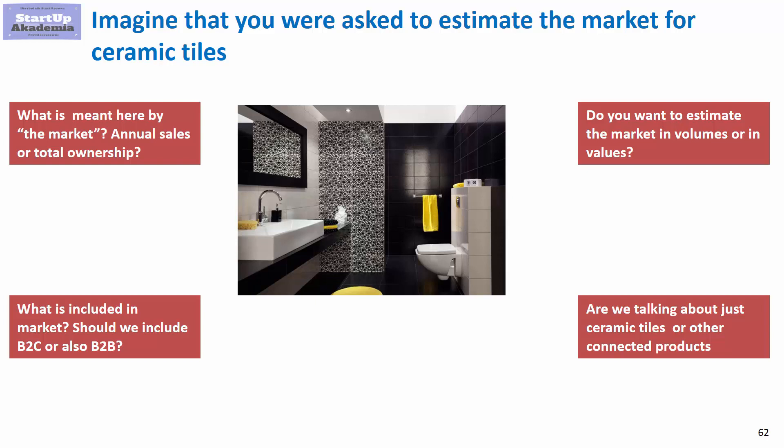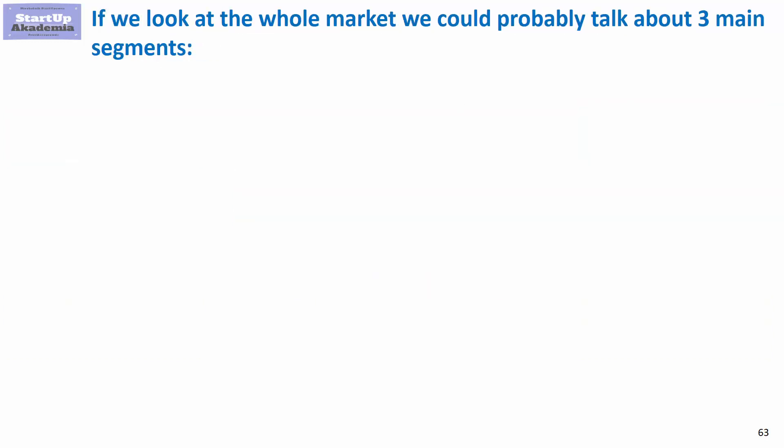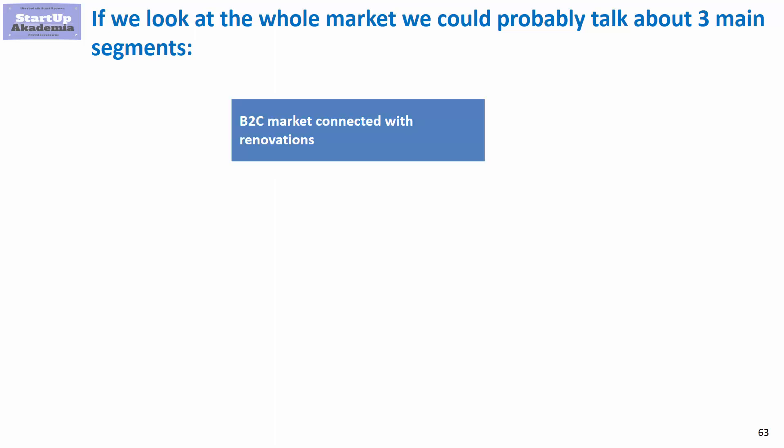For simplicity, assume you should do it by segments. First, we have the B2C market connected with renovations — somebody has already had an apartment for some years and decides to change the tiles. This happens every seven years in Poland and every three and a half years in Italy.